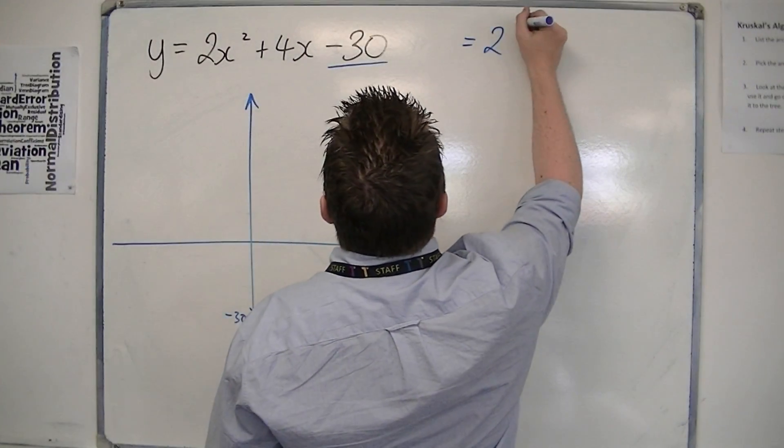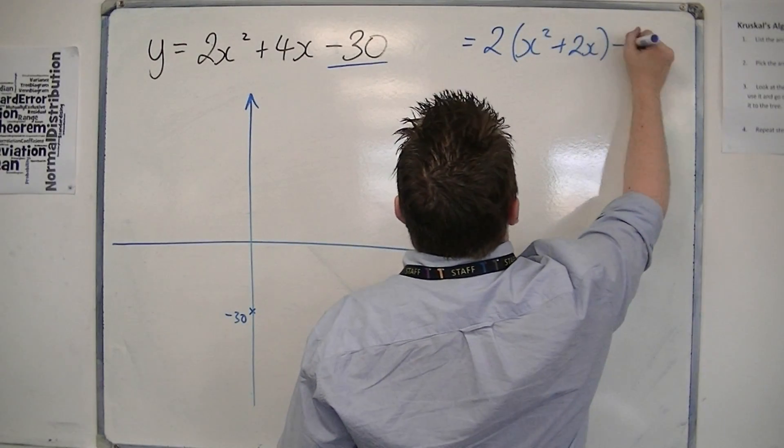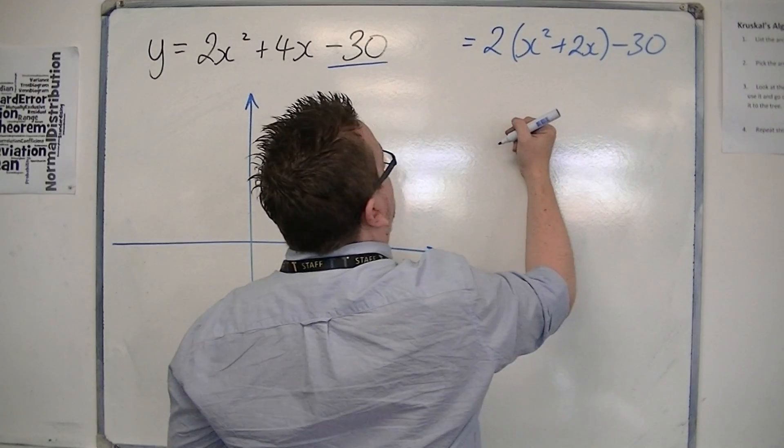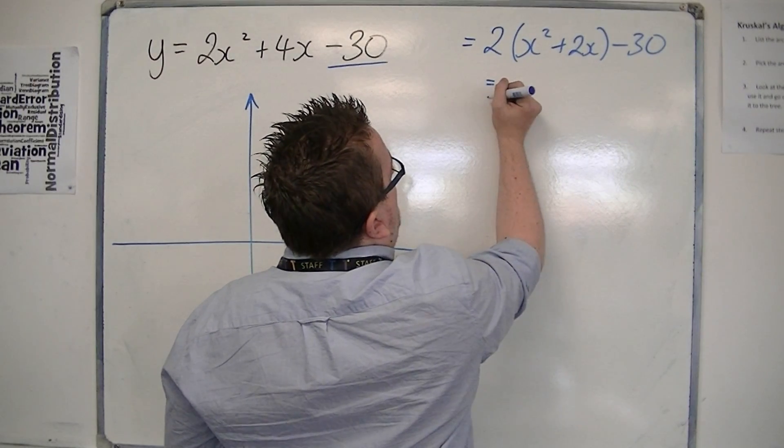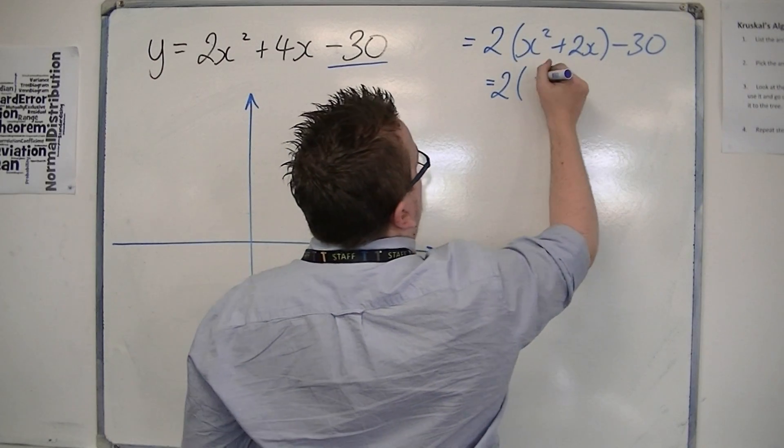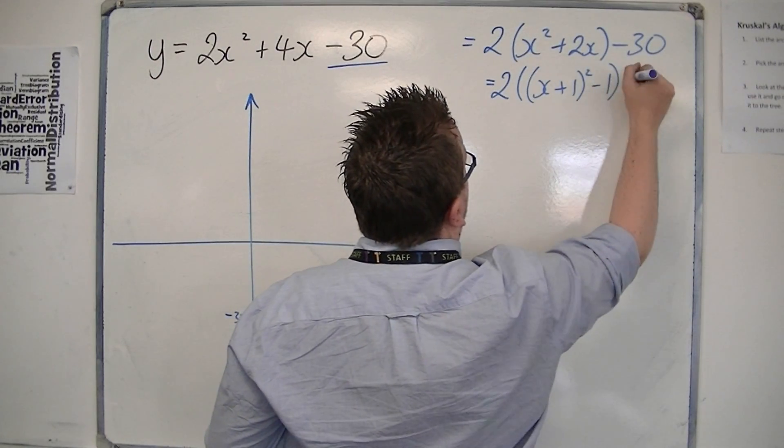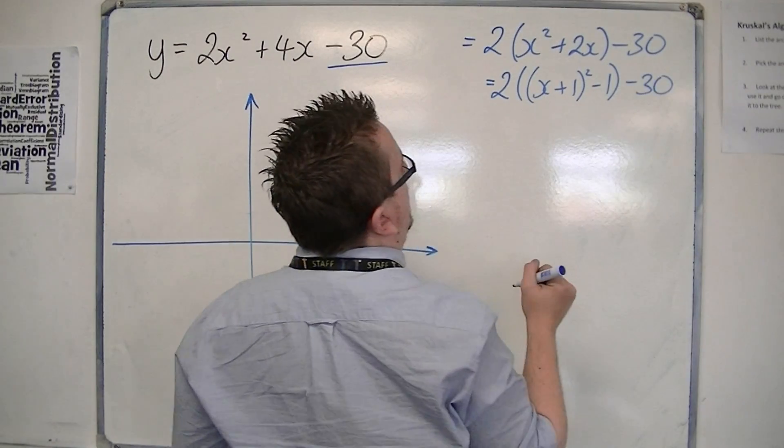So we're going to get 2 lots of x squared plus 2x, and we still want that minus 30 on the outside. Then I complete the square on what's inside the bracket. So we've got x plus 1, all squared, take away 1, take away 30 on the outside.